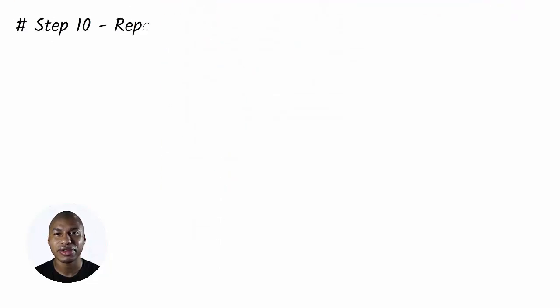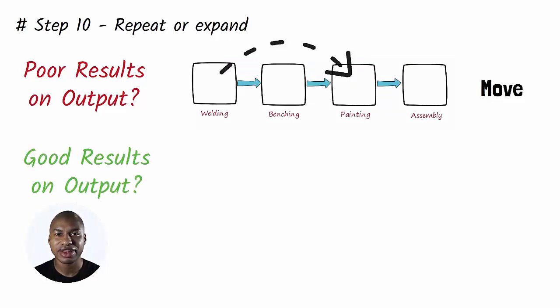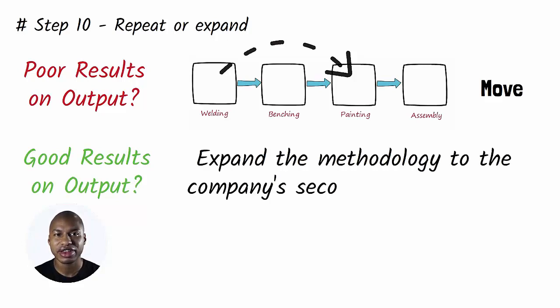Step 10. Repeat or Expand. Looking at the results of Step 9, you can easily understand whether to move to another machine in the value stream or expand the methodology to the company's second product family. My advice is not to expand the methodology until you have fully understood it and with tangible results.